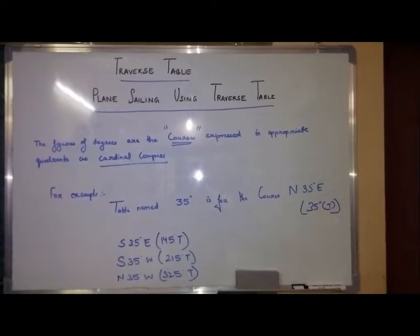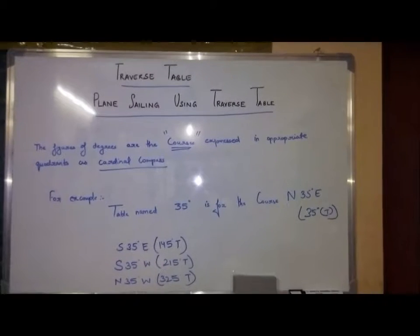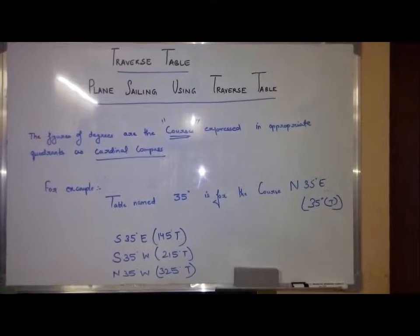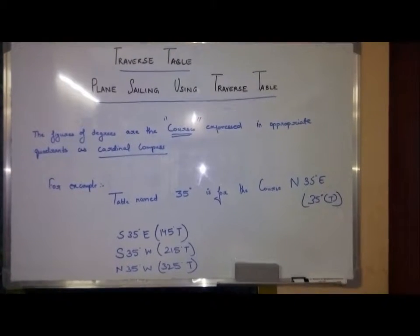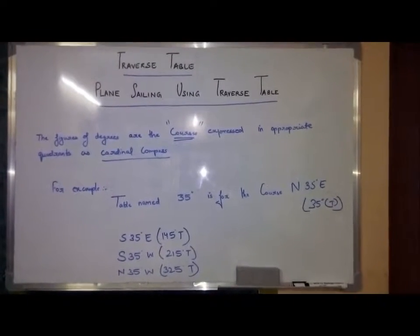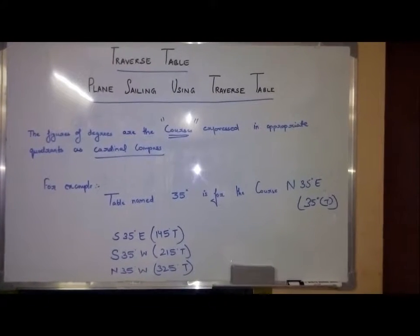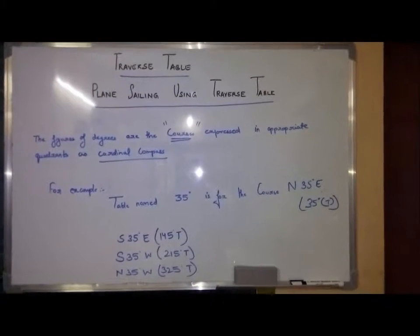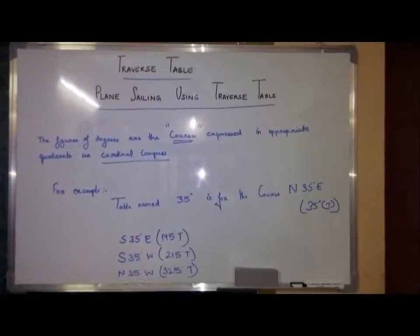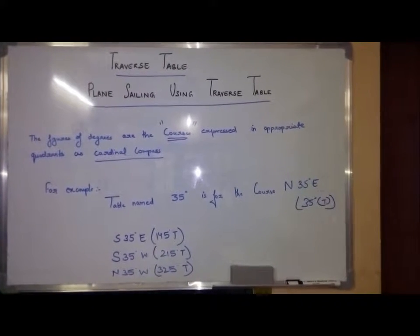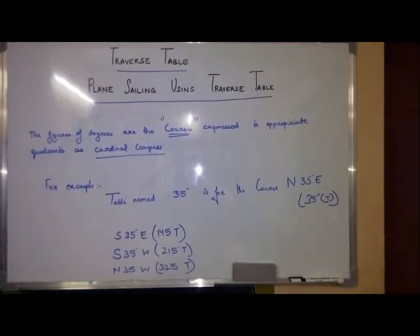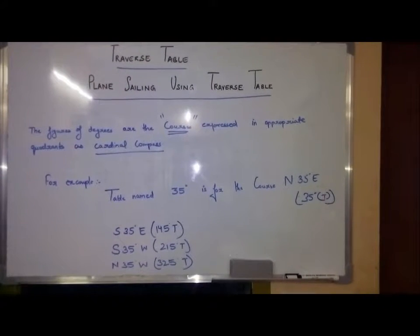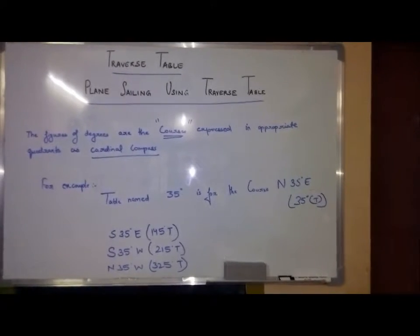Right now we are doing plane sailing. For example, table named 35 degrees is for the course north 35 degrees east or 35 degrees true. When you are having a course of 145 degrees true in a quadrant it will be south 35 degrees east. When you are having a course of 215 degrees true in a quadrant it will be south 35 degrees west. And when you are having a notation of 325 degrees true in a quadrant it will be north 35 degrees west.